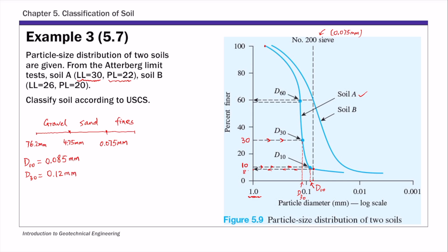For D60, you start from 60 percent finer on the y-axis and find the corresponding particle size. In practice, use a straight edge ruler to find D60. For soil A, D60 is about 0.135 millimeters. Now with these three D values we can calculate the two coefficients.